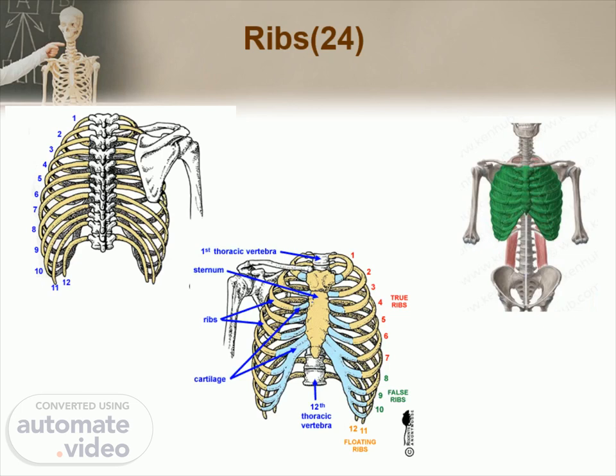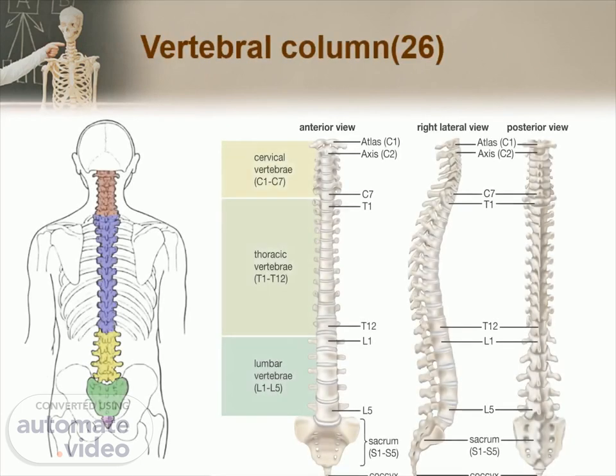The floating ribs are the last two pairs of human ribs that have no attachment to the sternum. The vertebral column, also known as the spinal column, is the central axis of the skeleton. It provides attachments to muscles, supports the trunk, protects the spinal cord and nerve roots, and serves as a site for hemopoiesis. Vertebrae are the 26 individual bones that interlock to form the spinal column. They are numbered and divided into regions: cervical, thoracic, lumbar, sacrum, and coccyx.